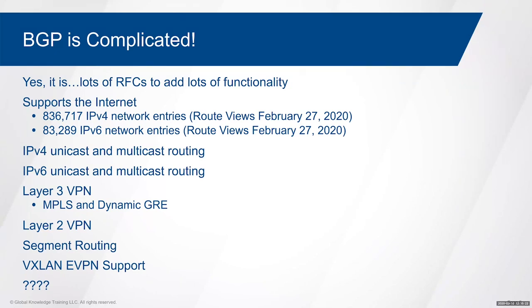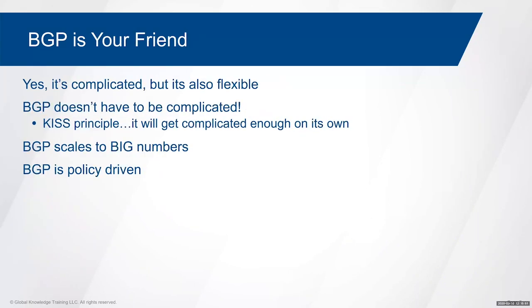The protocol scales to very large numbers. Numbers grabbed from a route collector on February 27th showed 800,000-plus routes for IPv4 and 83,000 for IPv6 — and we're talking about the internet here. It's the only routing protocol capable of scaling to those kinds of numbers. BGP is also very much a policy-type protocol — we can manipulate things within BGP through policy. On iOS and iOS XE platforms we use route maps; on iOS XR, route policy language.